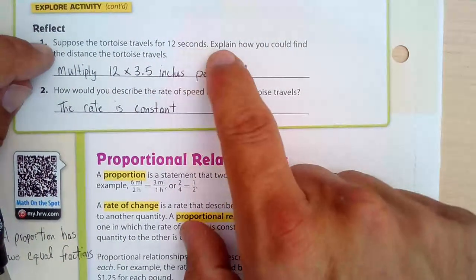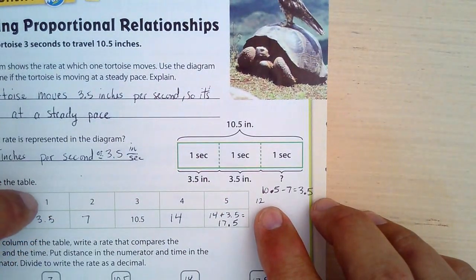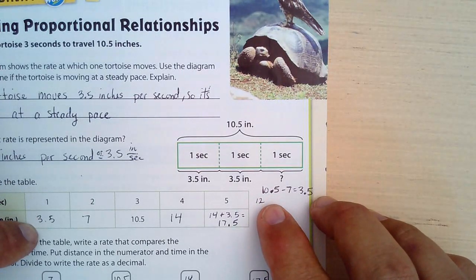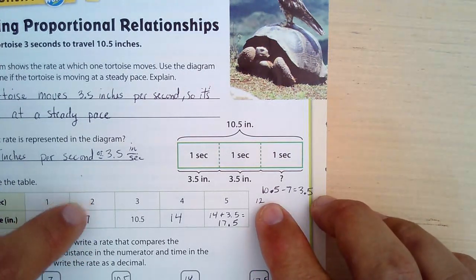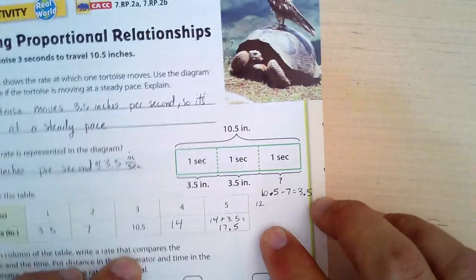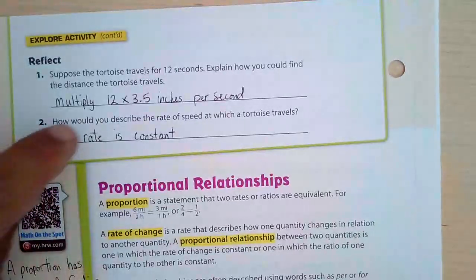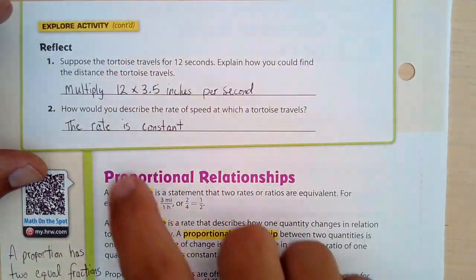Next. Suppose the tortoise travels for 12 seconds. Explain how you could find the distance for the tortoise. So if I go back here, and the tortoise travels for 12 seconds. So we have 12 over here. I could take the 12 and multiply it by 3.5. I could do that. I could take the 12, or I could do the 7 times 6. 2 times 6 is 12. So 7 times 6 would also give me the same thing. And I could do 3. 3 goes into 12 4 times, and I could multiply that by 4, or I could multiply 14 by 3. There's several ways of doing that. I decided to just say 12 times 3.5, which I believe is 42. But the answer doesn't matter. It matters how would you do it. And then how could you describe the rate of speed? Well, the rate is constant because each of these ratios were the same.